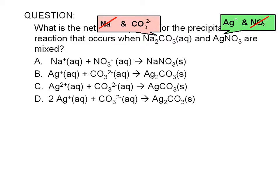Therefore, choice A is incorrect. Sodium nitrate is soluble in water — it will not be a precipitate. Choice C is obviously wrong. The charge of silver ion is positive 1, not positive 2. Choice B and D show the correct reactants and products. The product, silver carbonate, is insoluble in water according to the solubility rules.